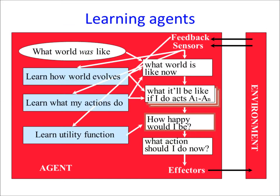The final and most general single agent is a learning agent. It doesn't necessarily know how the world evolves, what its actions do, or even what the utility function is — think reinforcement learning. It needs to learn these from observations and feedback. We've covered a huge spectrum: an agent that doesn't think, one that starts to think, one that thinks in stochastic environments, one that thinks for utility functions, and one that learns while thinking and acting.